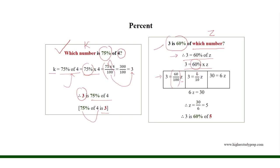6 over 10 is the equivalent fraction of 60 over 100, which helps us get that 30 equals 6Z. So 6 times Z equals 30, which gives us the result where Z equals 5. Therefore, 3 is 60% of 5.